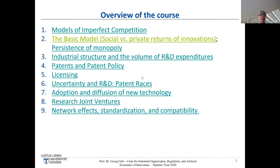We previously discussed R&D activities of firms and the famous 3% goal of the European Union in terms of R&D spending as a percentage of GDP. I also gave you an overview of some important workhorse models we will use, in particular Monopoly, and then two models of imperfect competition, namely Bertrand and Cournot.